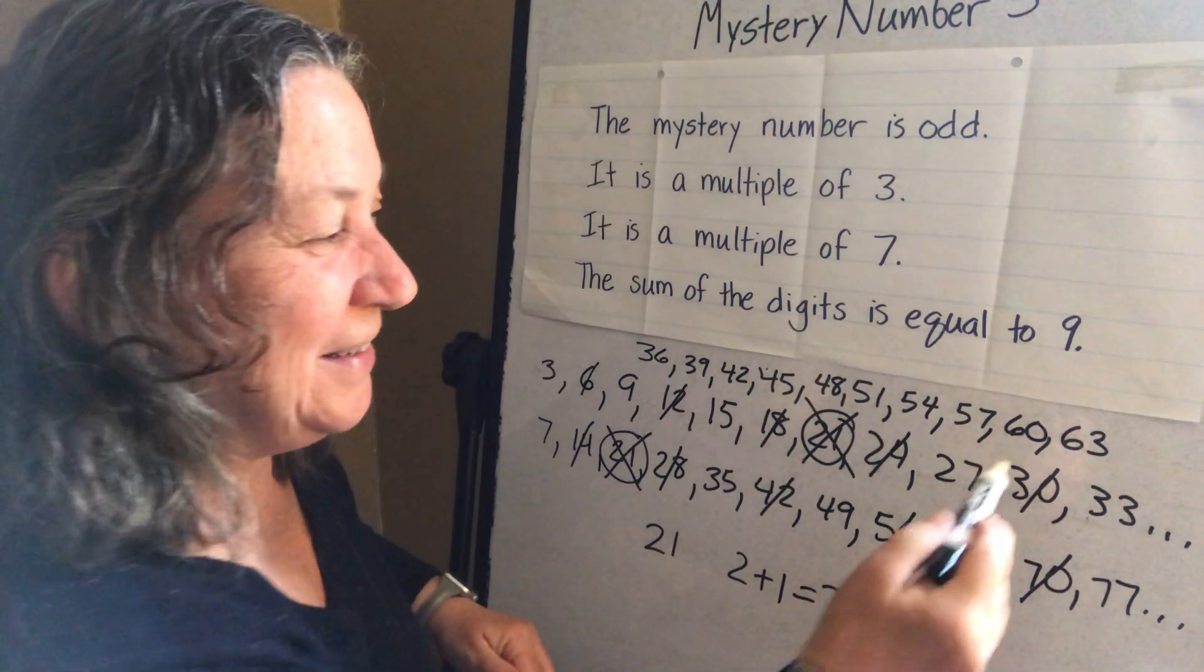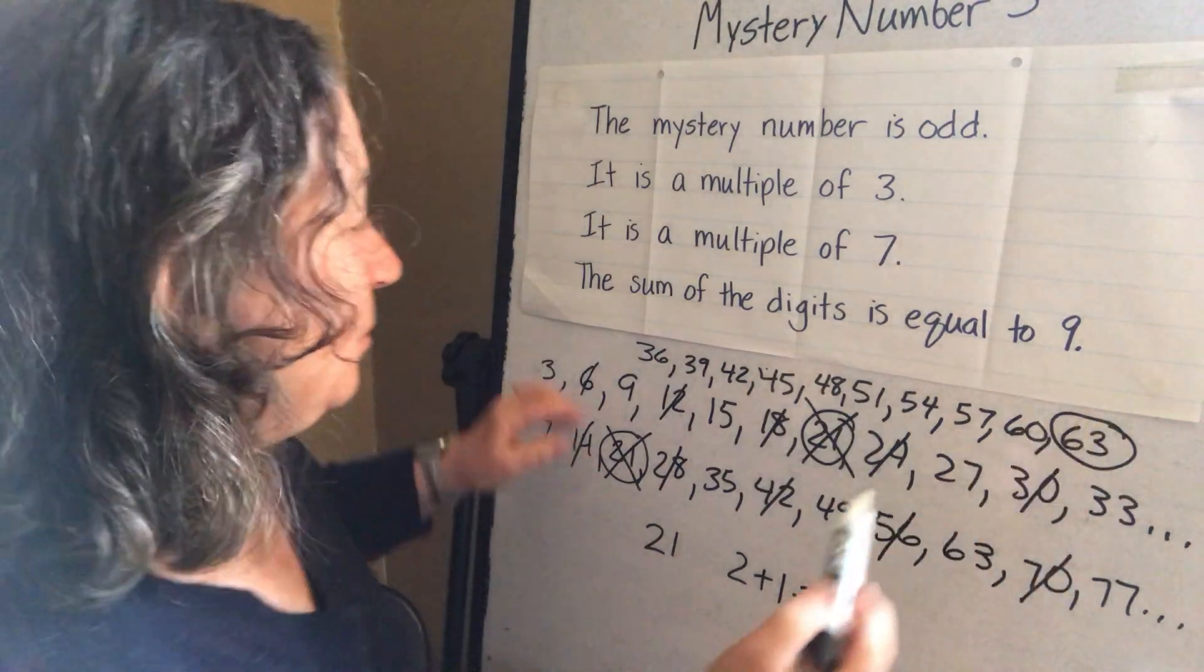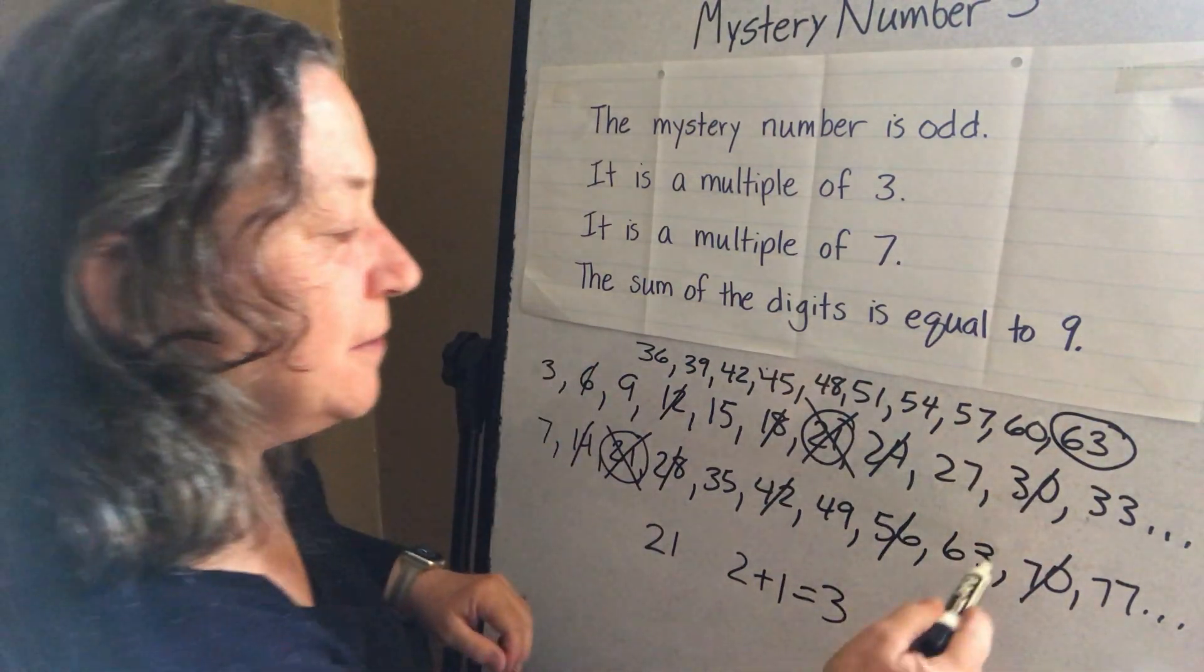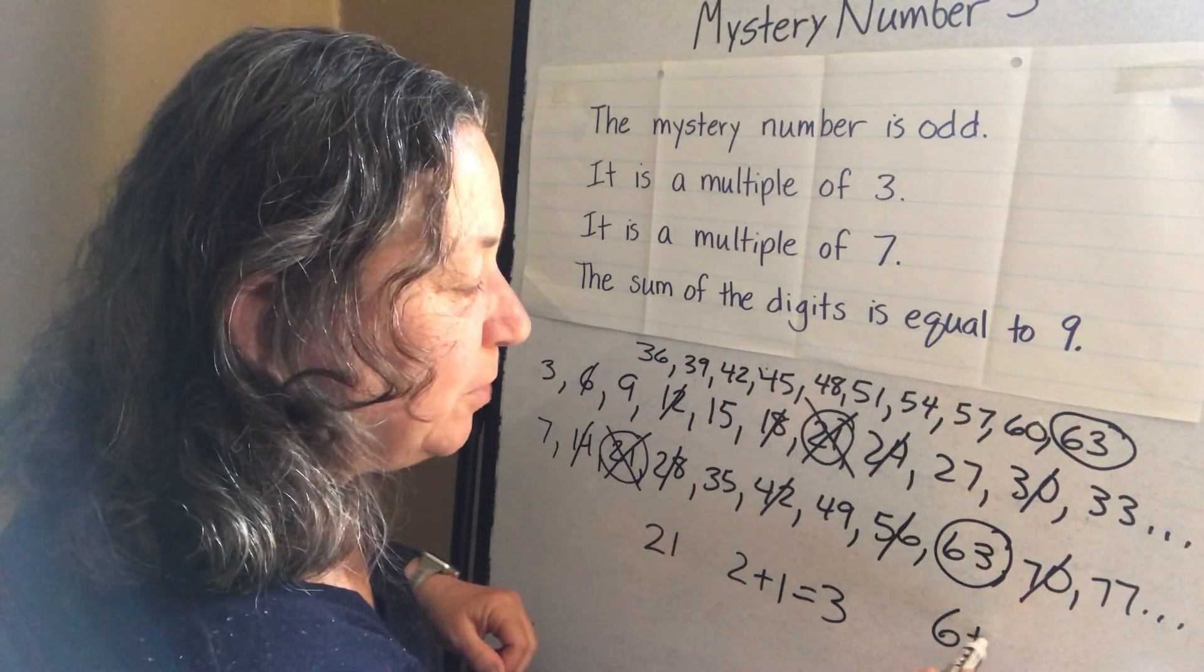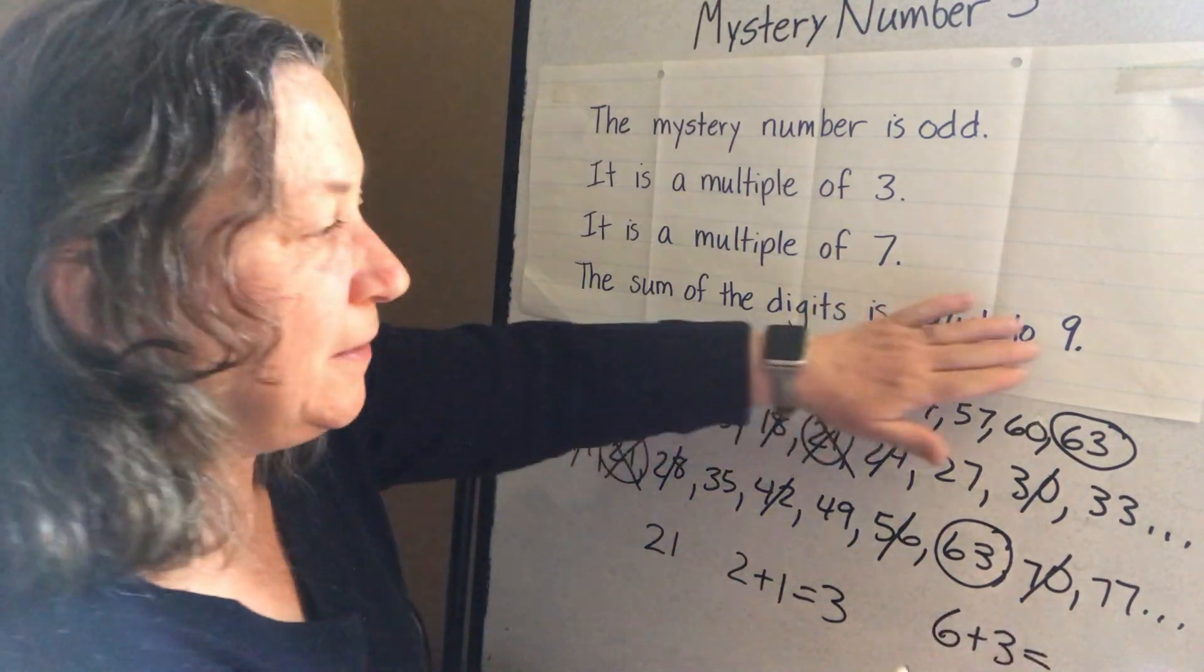Ta-da! 63 is a multiple of three. And 63 is a multiple of seven. And when you add six plus three, it equals nine.